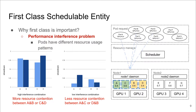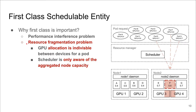Two major problems may occur when GPUs are not first-class resources. First is the performance interference problem. Performance degradation may occur due to resource contention between jobs sharing the same GPU, but the degree of degradation can vary depending on the application workload pattern. For example, given four jobs A, B, C, D, running A and B on the same GPU may cause much higher performance degradation than running A and C together. Hence, performance interference can be reduced if we have control of the GPU assignment.